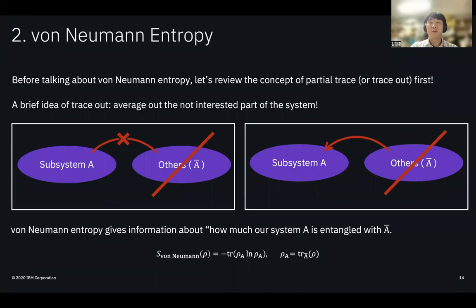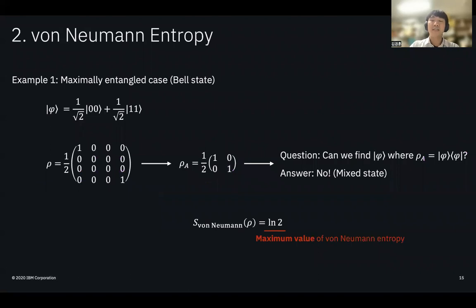Von Neumann entropy gives information about the quantumness of subsystem A after tracing out A-bar. Since we know that quantumness of A is directly related to the amount of entanglement of A and A-bar, we can measure the entanglement of A and A-bar by calculating von Neumann entropy of A when the full system is a Bell state.